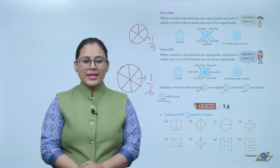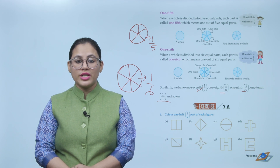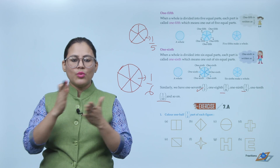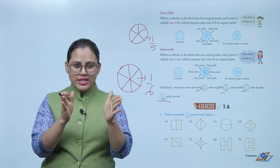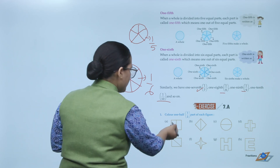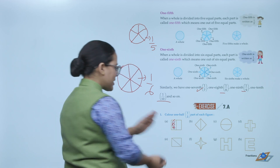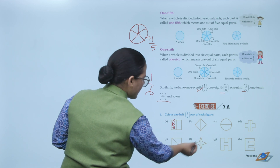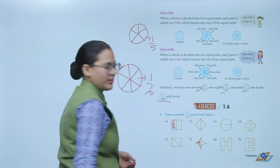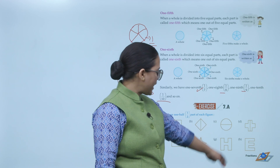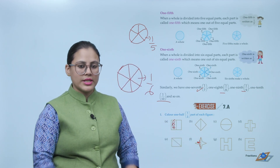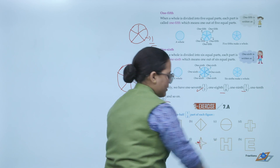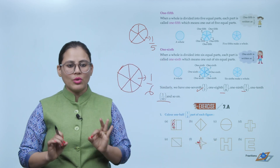Exercise: Color one half part of each figure. You need to color one half part — that means the figure is divided into 2 equal parts, and you color one of them. That's completely your choice which part you color. Similarly, for an H-shaped figure, you can color either half part.